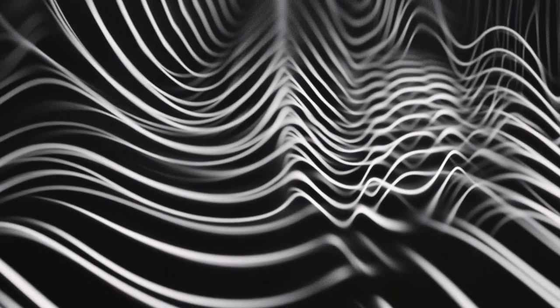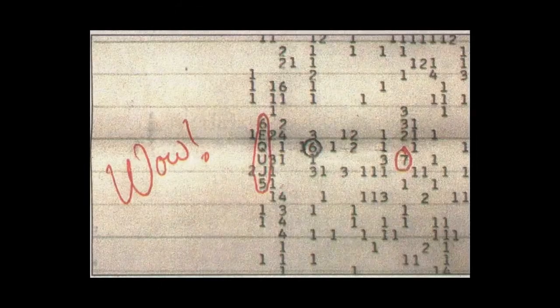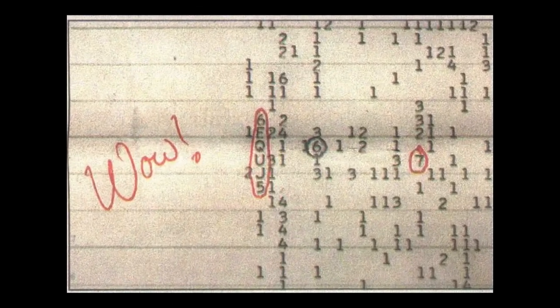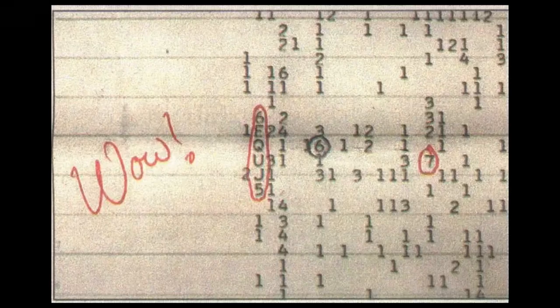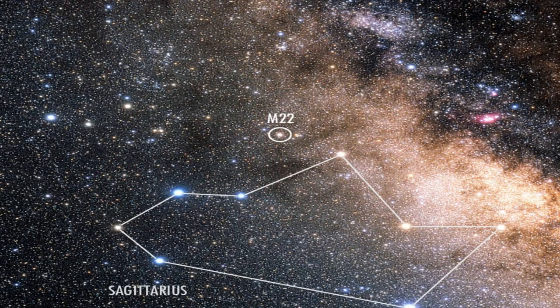Number 3: The Wow Signal. In 1977, a powerful and unexplained radio signal was detected by astronomer Jerry Ehman, known as the Wow Signal. It lasted 72 seconds and came from the constellation Sagittarius. To this day, no one knows its true origin.